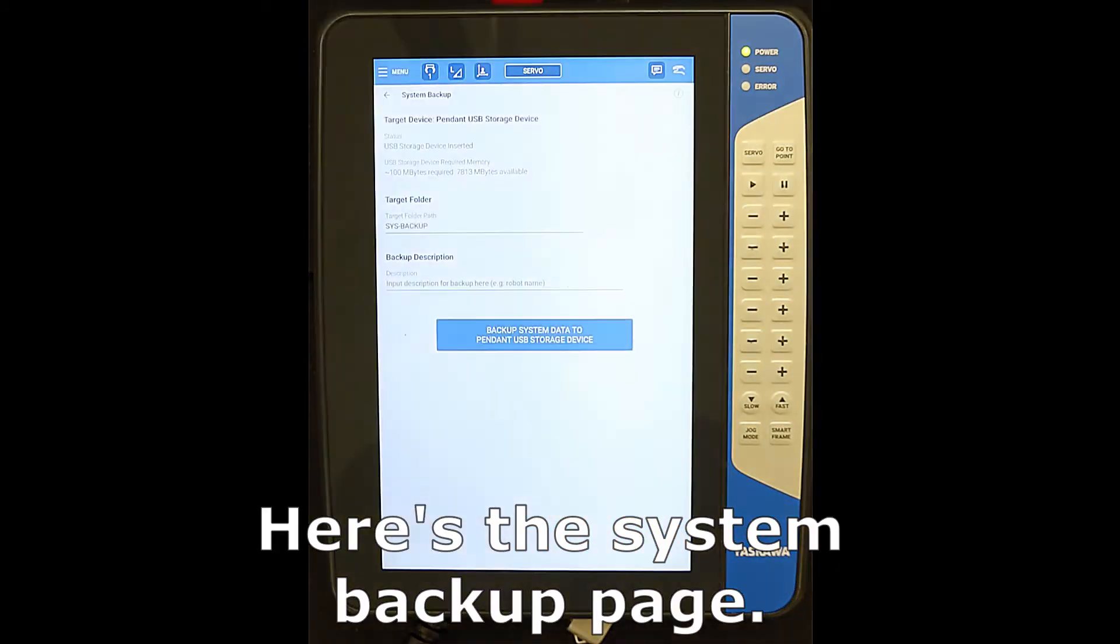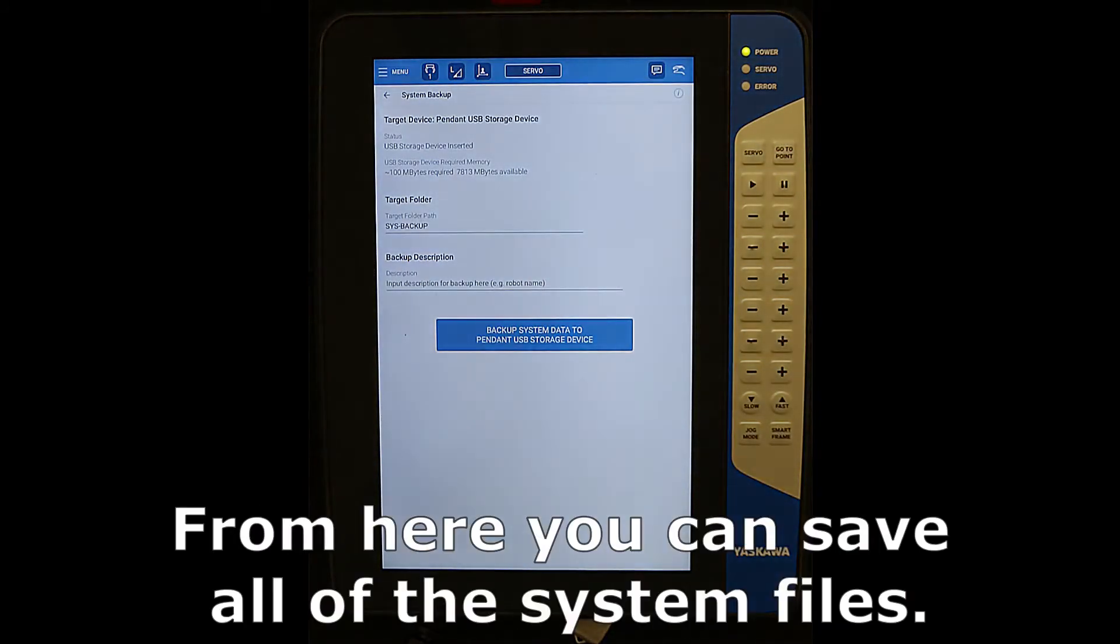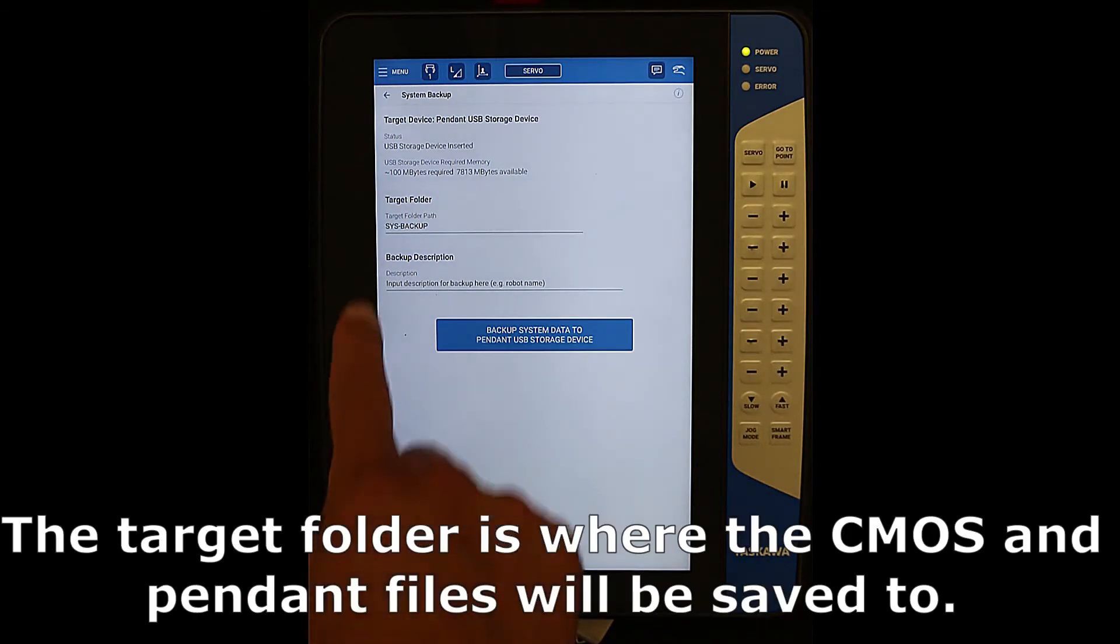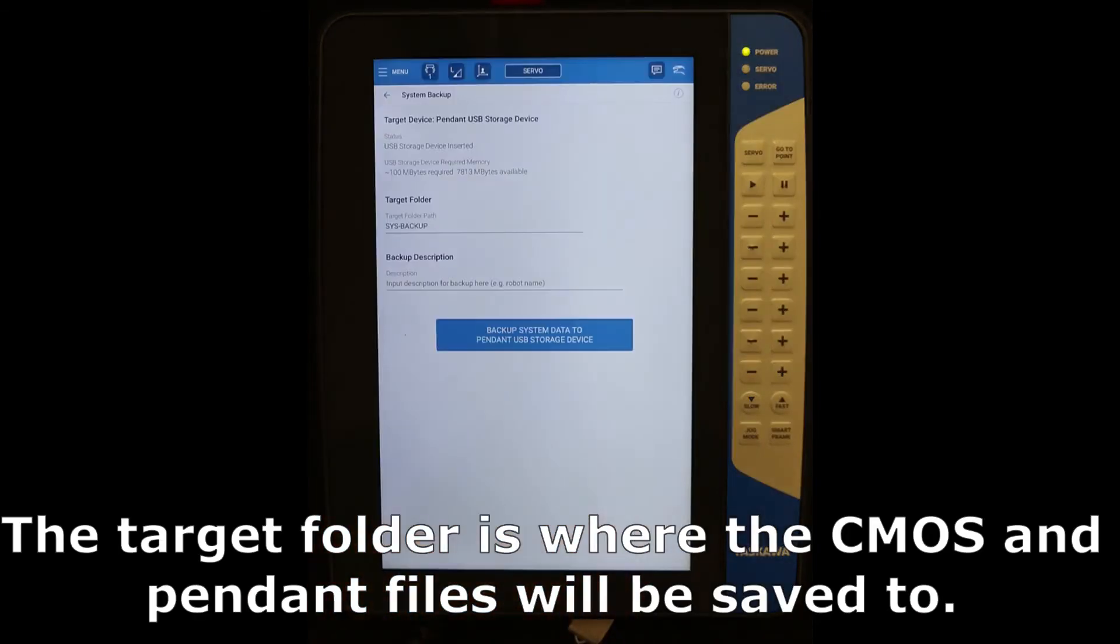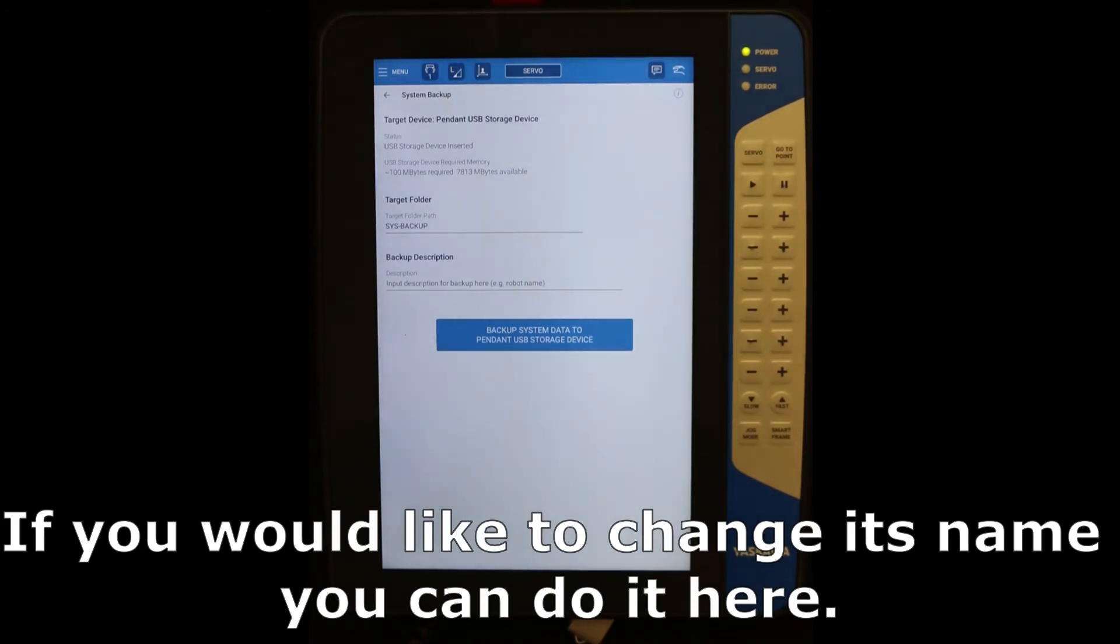Here is the system backup page. From here you can save all the system files. The target folder is where the CMOS and pendant files will be saved as well. If you would like to change its name, you can do it here.